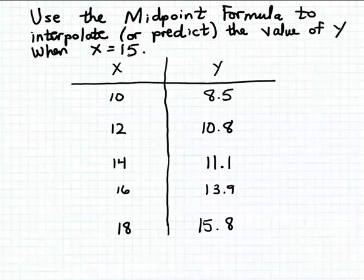The reason this is called an interpolation is because that value 15 for x — for which we want to predict the y value — is in between or inside two of the x values that are already given in the table, but the x value 15 itself is not given in the table.